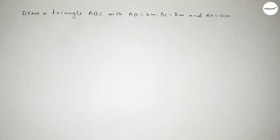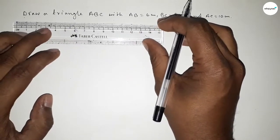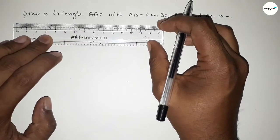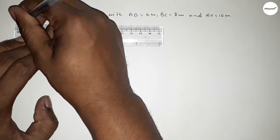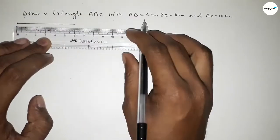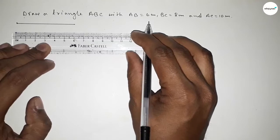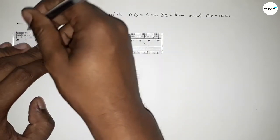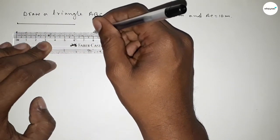First of all, we have to draw a line of length 6 centimeters. This is 0 and this is 6 centimeters. And drawing another line of length 8 centimeters — this is 0 and this is 8.